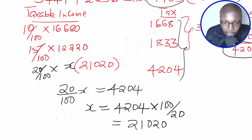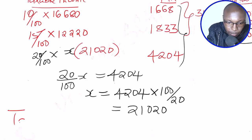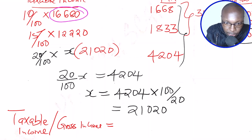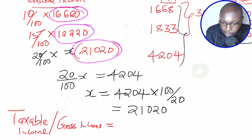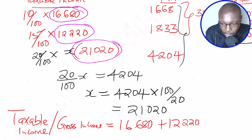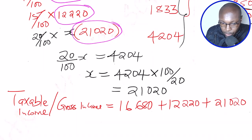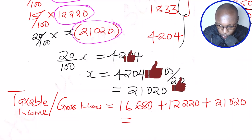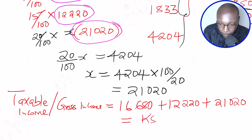Now we have the taxable income for each band. The gross taxable income will be given by adding the three amounts: 16,680 plus 12,220 plus 21,020. This gives a total taxable income of 49,920.